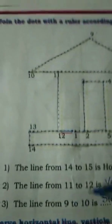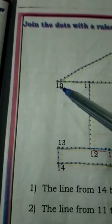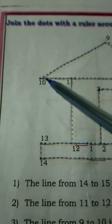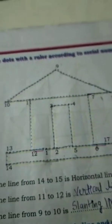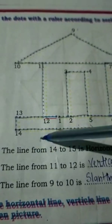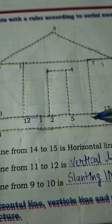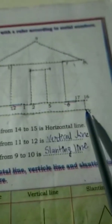Next, the line from 9 to 10 — it is a slanting line. From 9 to 8, this is a horizontal line again. You can see 11 to 12 are vertical lines, from 7 to 6 as well it is a vertical line, and 14 to 15 and 13 to 16 are all horizontal lines.